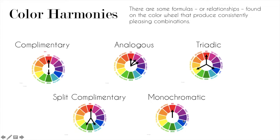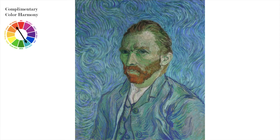Lastly is monochromatic. Mono means one, chromatic means color. This is any color plus white and black — any one color harmony plus white and black. So let's look at a few examples of these to really get to know them.